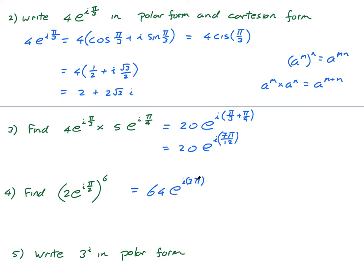This touches on what I'll do in the next lesson: when you raise a complex number to a power, you're actually rotating it. Raising to the power of 2 gives e^(iπ), power of 3 gives 3π/2, power of 4 gives 4π/2 — it's rotating it. I'll get into that in more detail in the next lesson.